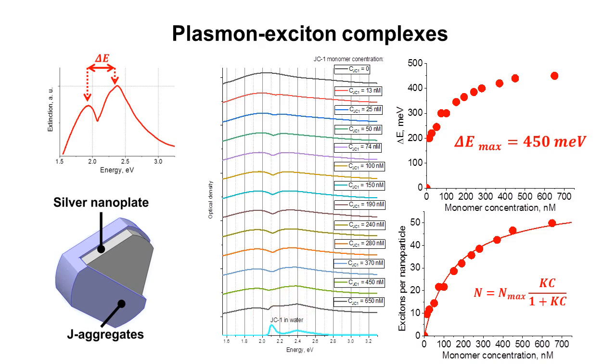This means that at these concentrations, some J-aggregates are uncoupled and cannot negatively interfere with a plasmon mode, which leads to the simple superposition of the J-band spectrum with a spectrum of plasmon exciton complexes. Thus, we reached the concentrations of the maximum covering of the nanoplates with J-aggregates, with maximum Rabi splitting energy of 450 meV. This also corresponds to 50 excitons involved in the plasmon exciton coupling.